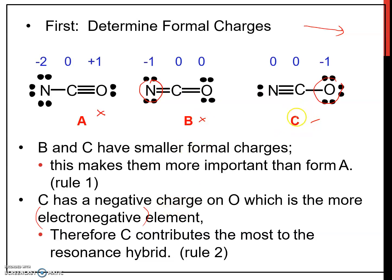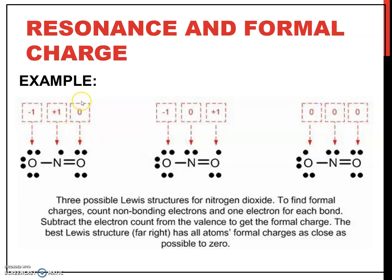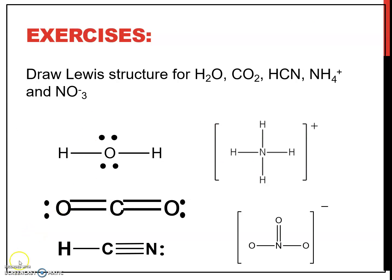Therefore, the most possible structure is C: it has lower formal charges and the negative formal charge is on the electronegative atom. Structure C contributes the most to the resonance hybrid structure. For this example of resonance structures, you can try to calculate the formal charge for each compound and check your calculation. You can also try the exercise provided.